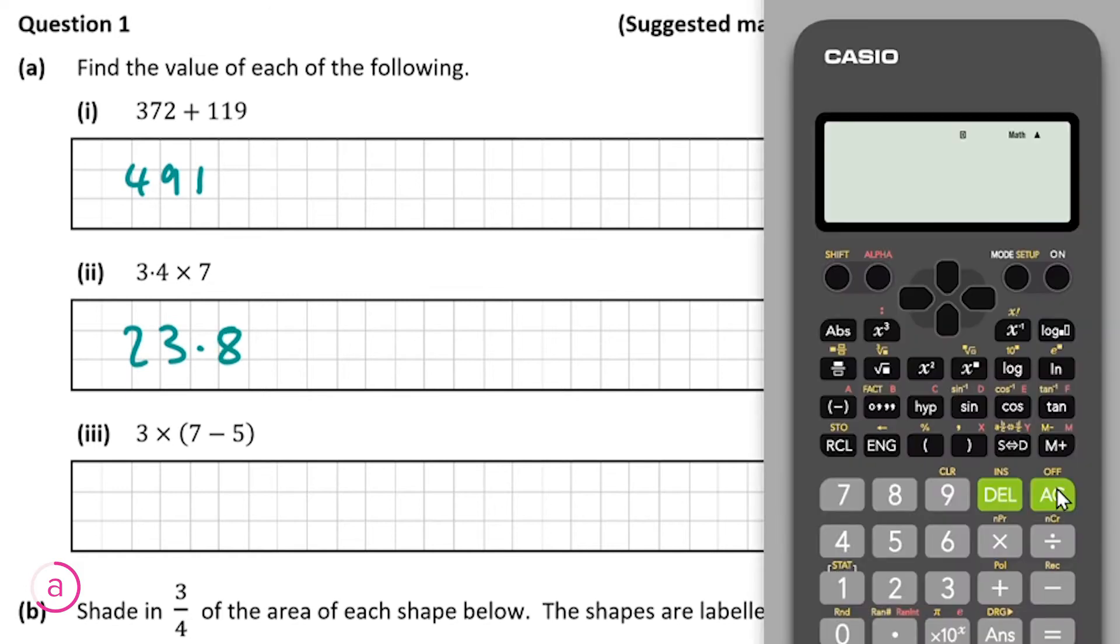And finally looking at our last part, part three, we have three multiplied by seven minus five. And so since we have seven minus five in brackets, we have to do that first. So we know that seven minus five is going to be equal to two, so it's going to be three multiplied by two which will give us our answer of six.